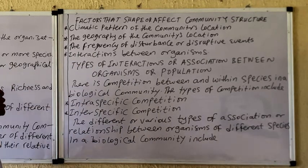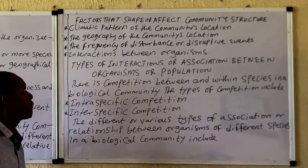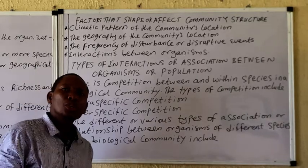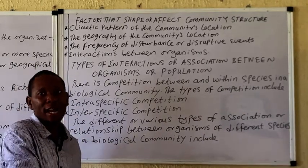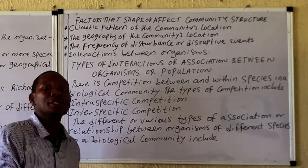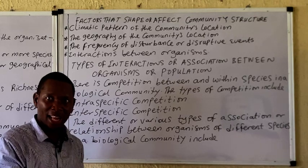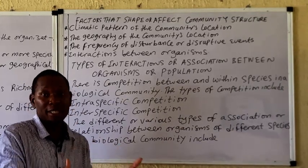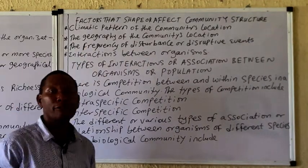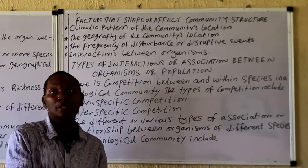Let's look at the factors that shape or affect community structure. Note that when a species is highly diverse or possesses high species diversity, it means there is a large number of species in that environment and probably a large number of organisms as well. Low species diversity means the number of species present is not many. The first factor is the climatic pattern of the community, which can generally affect the abundance and the community structure — that is, the species richness and species diversity.